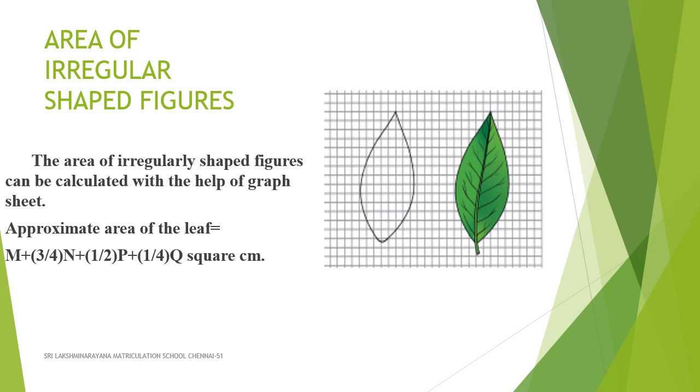Now, the approximate area of the leaf can be calculated using the following formula. Approximate area of the leaf equals M plus 3/4 N plus 1/2 P plus 1/4 Q square centimeter. This formula can be used to calculate the area of any irregularly shaped plane figures.